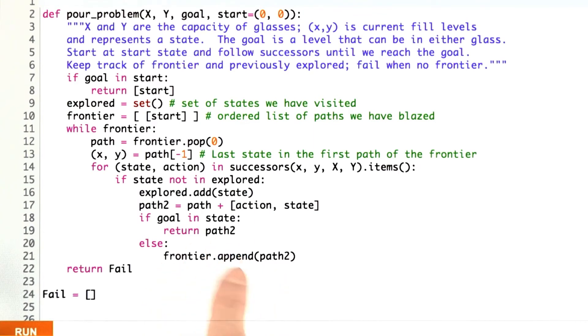Otherwise, just add this path onto the frontier, and we'll pull something off of the frontier later. If we go all the way through and we run out of frontiers to explore from, then we can't reach the goal, and we return fail. You could have fail be none. I decided to make it be the empty list because all the other things we were returning were lists. Either way, none or fail both are equivalent to false in Python if statements, so probably either one would do fine.